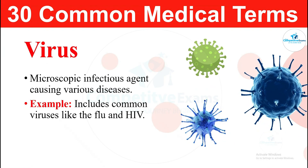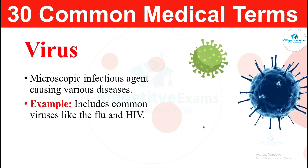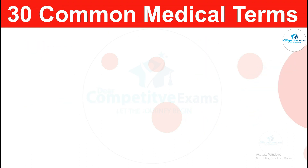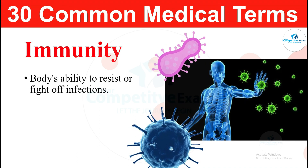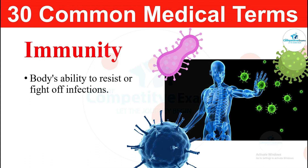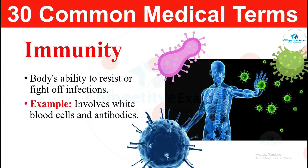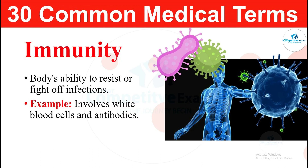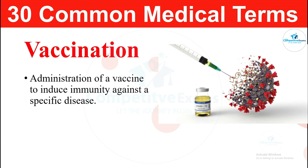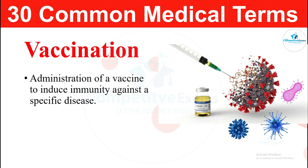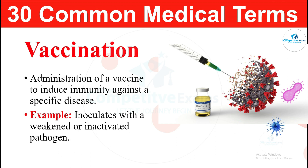The next medical term: immunity. Immunity is the body's ability to resist or fight off infections. It involves white blood cells and antibodies. The next term: vaccination. Vaccination is the administration of a vaccine to induce immunity against a specific disease. It inoculates with a weakened or inactivated pathogen.